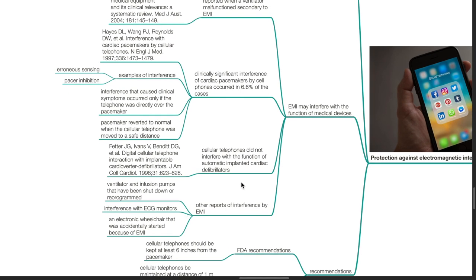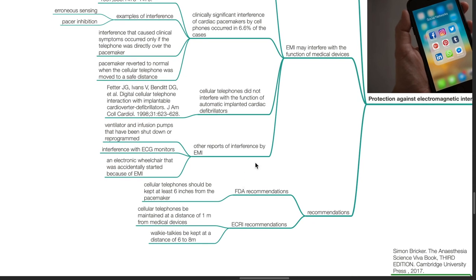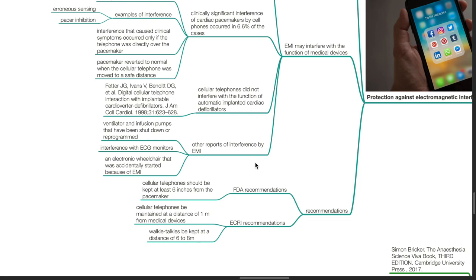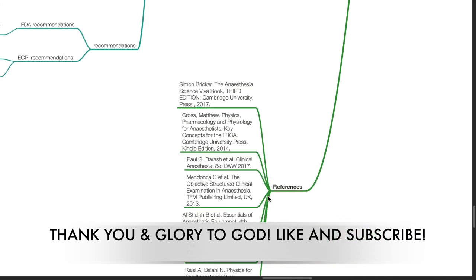In research done by Fetter et al, cellular telephones did not interfere with the function of automated implanted cardiac defibrillators. Other examples of interference by EMI reported include ventilators and infusion pumps that have shut down or reprogrammed, interference with ECG monitors, and electronic wheelchairs that were accidentally started due to EMI. FDA recommends that cellular telephones should be kept at least 6 inches from the pacemaker. ECRI recommendations include cellular telephones must be maintained at a distance of 1 meter from medical devices. Walkie-talkies be kept at a distance of 6 to 8 meters. These are my references. Thank you.